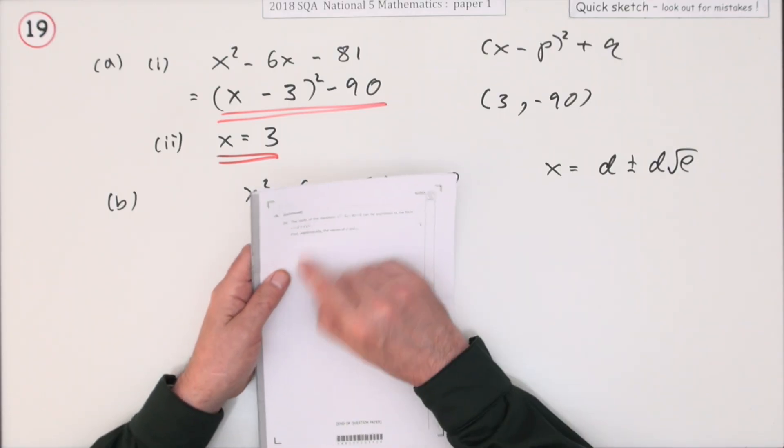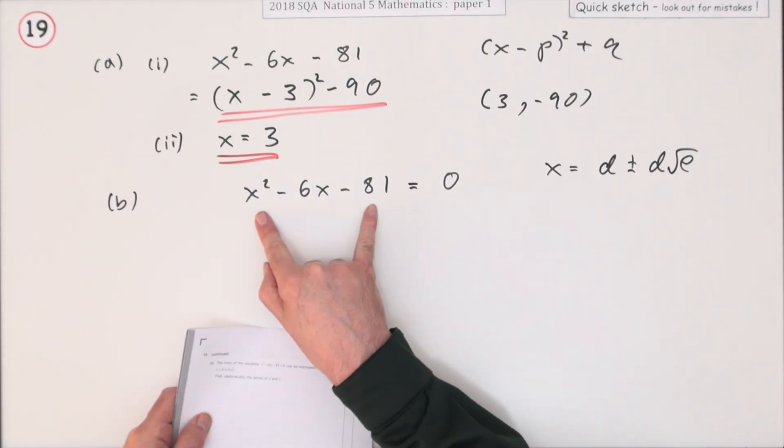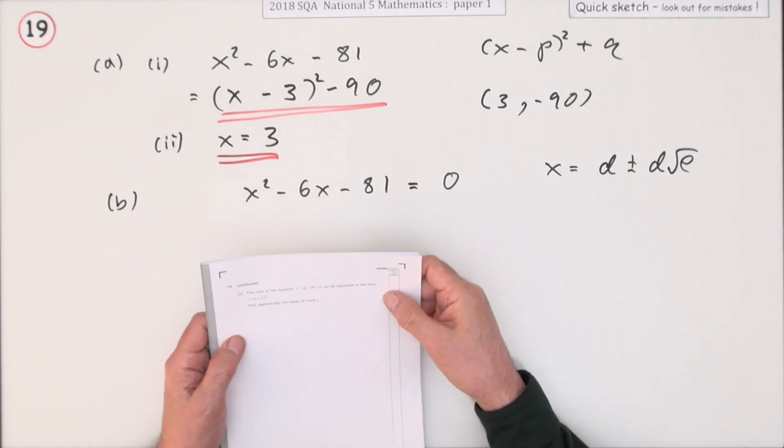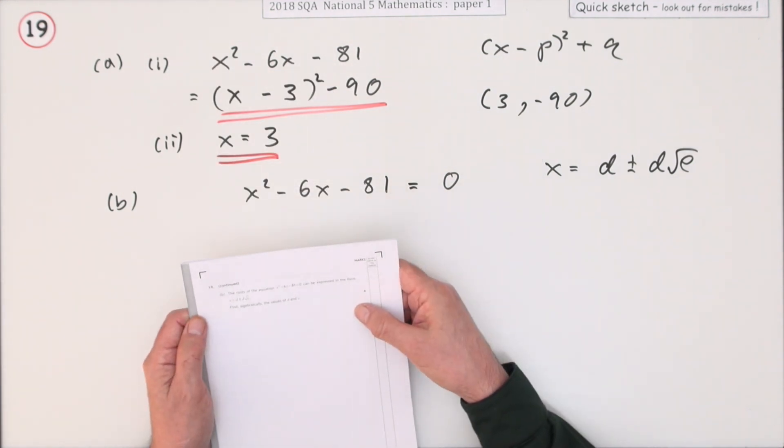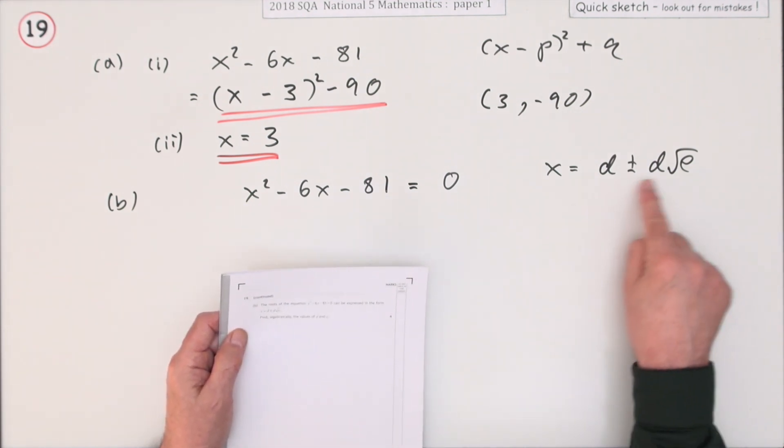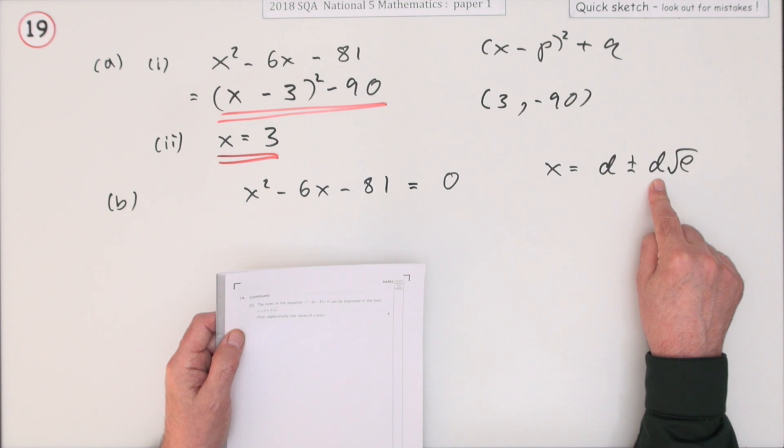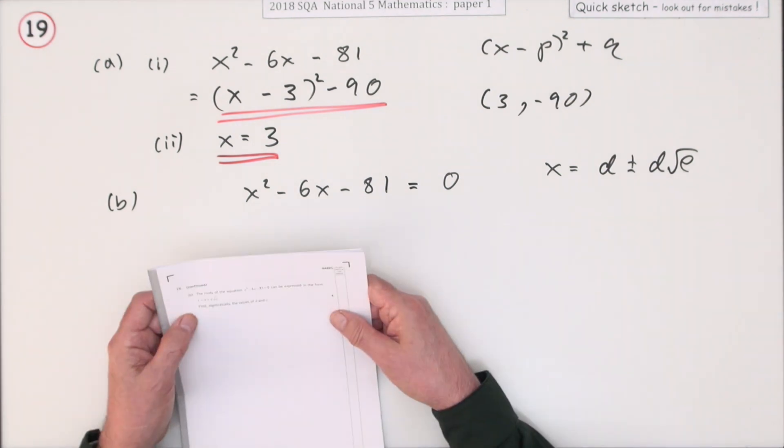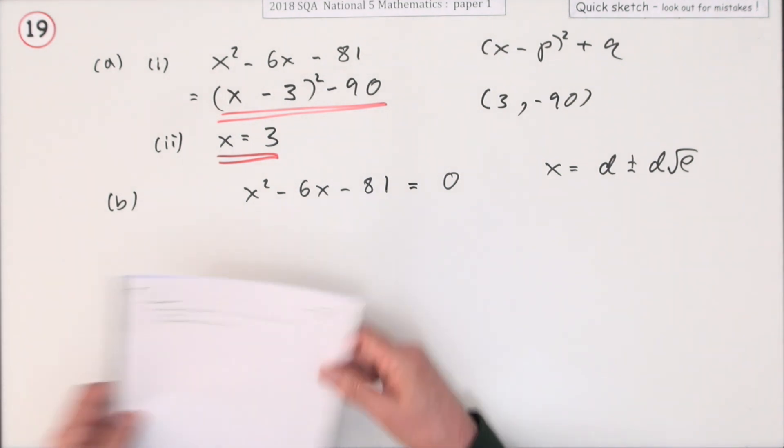Now this last part says the roots of this equation. Notice exactly the same quadratic as you had there. Call it a trinomial if you like. Which simply means it's a quadratic with three parts. It can be expressed in this form. Notice there's a repeated digit there. There must be something and then the same number again and then a different number. Find algebraically the values of d and e.